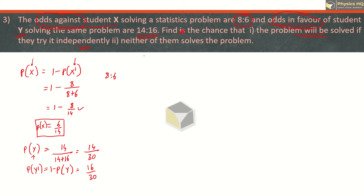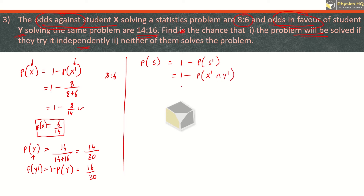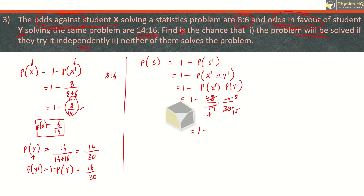For part one, the problem will be solved when they solve it independently. There will be 3 cases: both solve it, only x solves it, or only y solves it. We can solve this easily by: 1 minus probability that the sum is not solved. The sum is not solved only when x also cannot solve it (x dash) and y also cannot solve it (y dash). So this is 1 minus P(x dash) times P(y dash). P(x dash) is 8 by 14, simplified to 4 by 7, and P(y dash) is 16 by 30, simplified to 8 by 15. So this is 1 minus 32 by 105, which is 73 by 105.